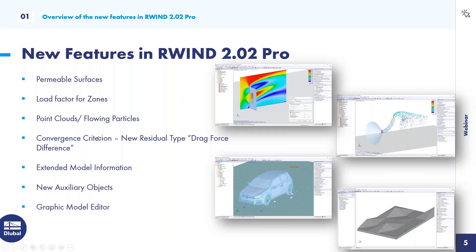The next feature is the convergence criterion. Currently we stopped the calculation after a certain drop of pressure. Since this is not suitable for every stationary calculation, we added a new type based on the drag force difference on the model. We also added extended model information — you can right-click on your model and get information about the area and other useful details. There are also new auxiliary objects: you can add comments or dimensions to your model.